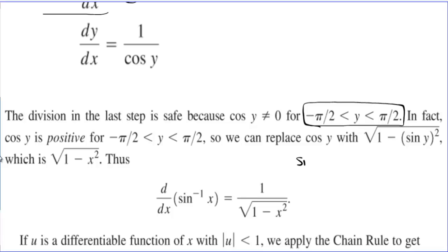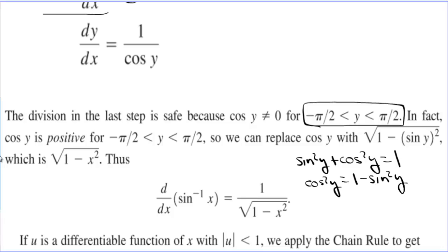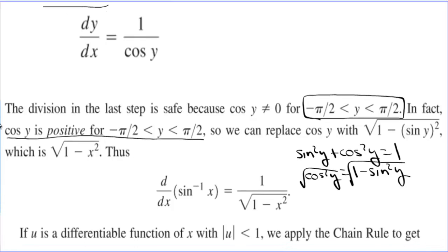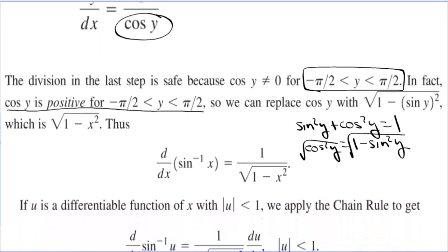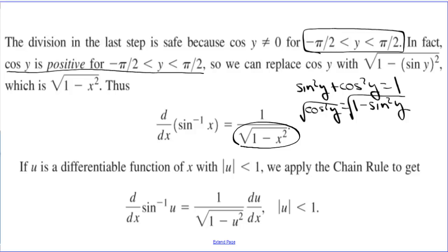We can replace cosine y with the square root of 1 minus sine squared y. This comes from sine squared y plus cosine squared y equals 1 — subtracting sine squared gives cosine squared y equals 1 minus sine squared y, and then we square root both sides. Since cosine y is positive from negative pi over 2 to pi over 2, we use the positive root and replace cosine y with square root of 1 minus x squared.